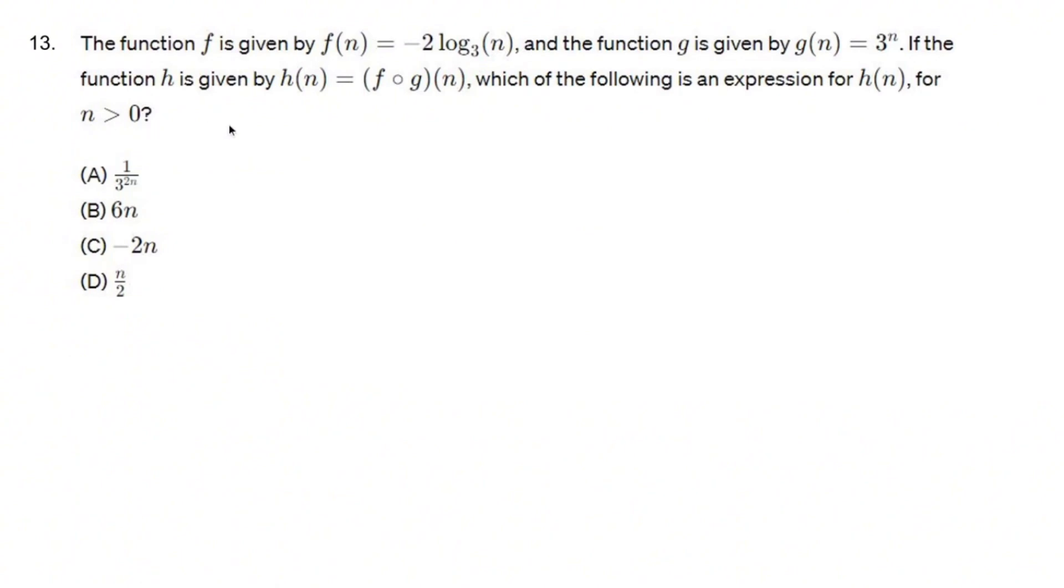For n greater than zero, I prefer to write this out as f of g of n. That's how I like to do it. If you prefer the fog notation, then good for you. What you do with this is you start out with f.